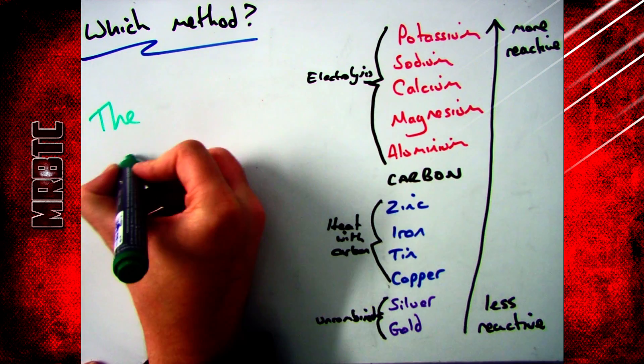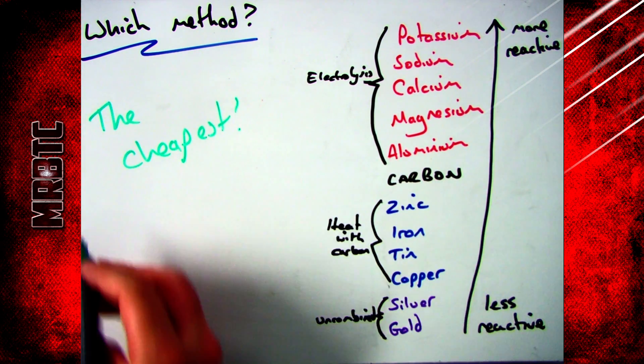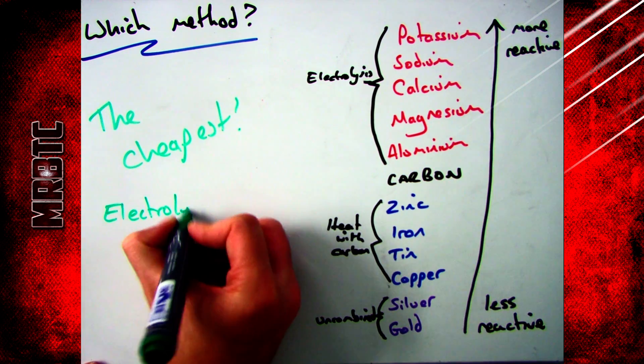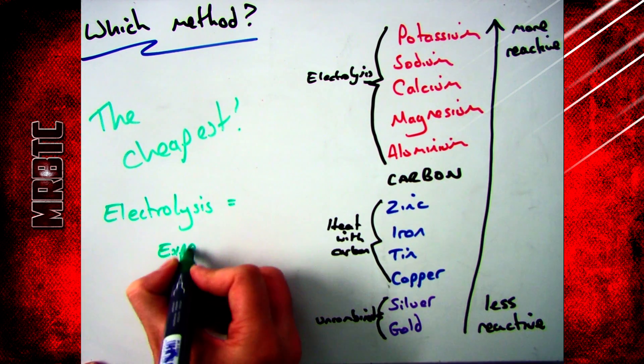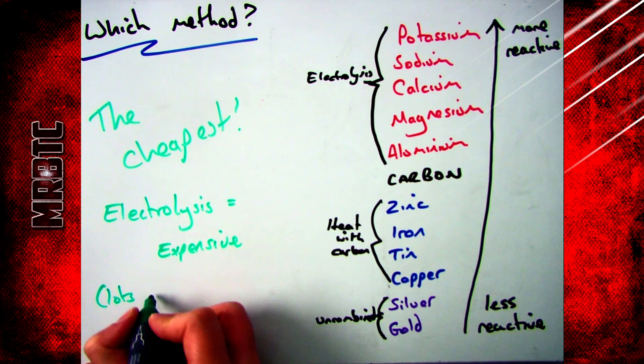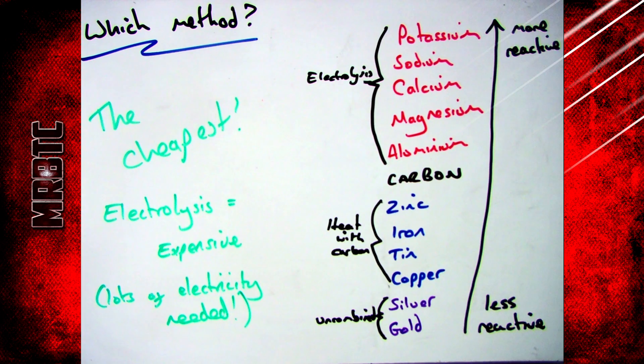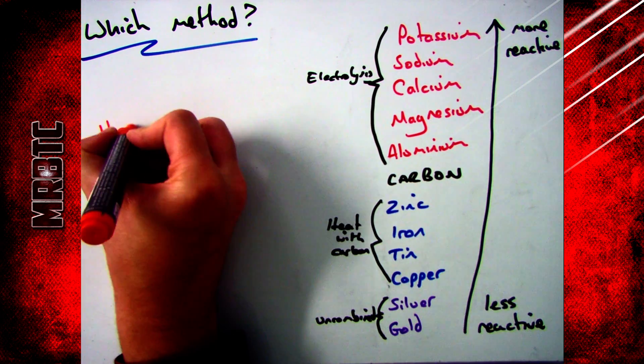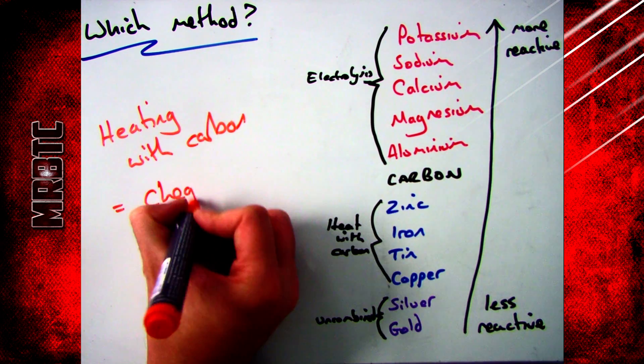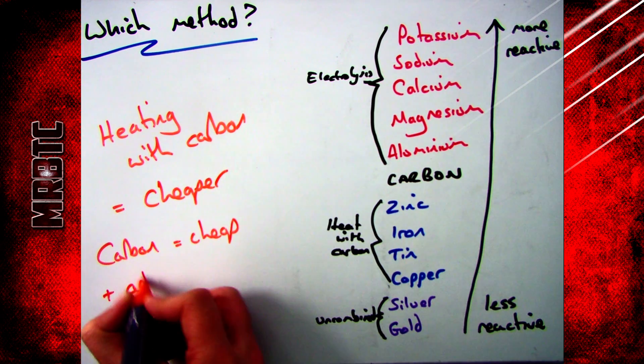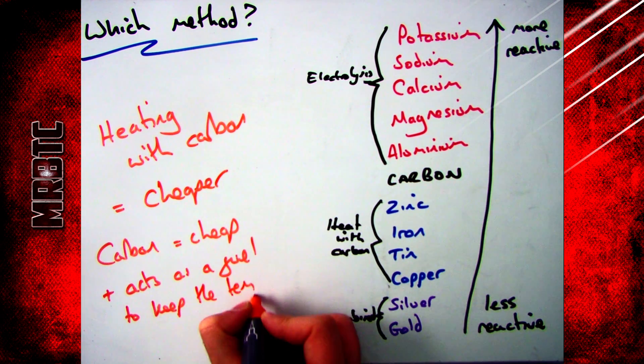The question now is, you've got these two different methods of extraction, which one should you use? And the answer is the cheapest. Electrolysis is the most expensive one, and that's because lots of electricity is needed to actually break the compounds apart. So if you have the choice, don't choose that one. What you want to choose is heating with carbon, because carbon is cheap and it acts as a fuel which will keep the temperature high.